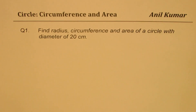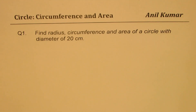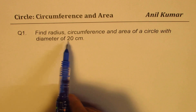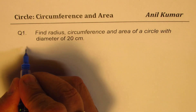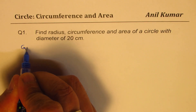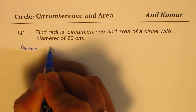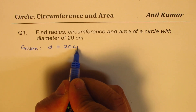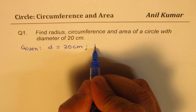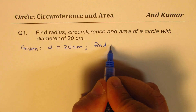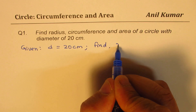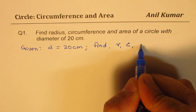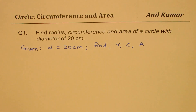Here is question number one: find radius, circumference, and area of a circle with diameter of 20 centimeters. In this case, we are given diameter d equals to 20 centimeters. And we need to find radius, circumference C, and area A — these are the three things which we need to find.